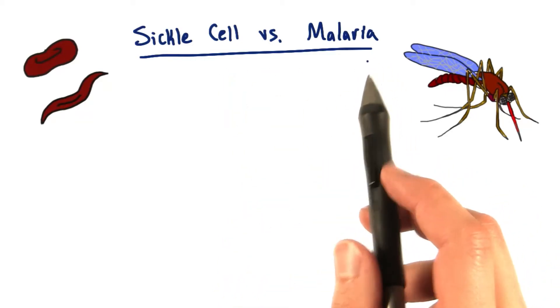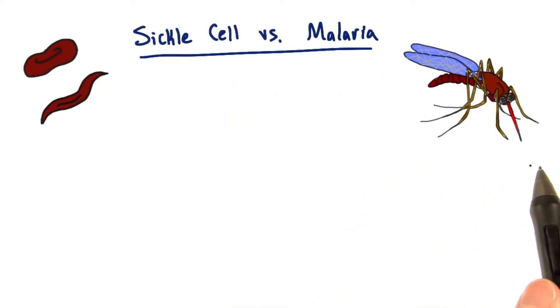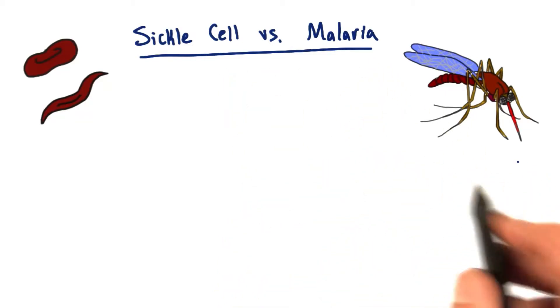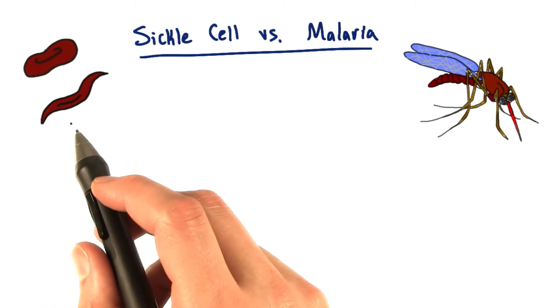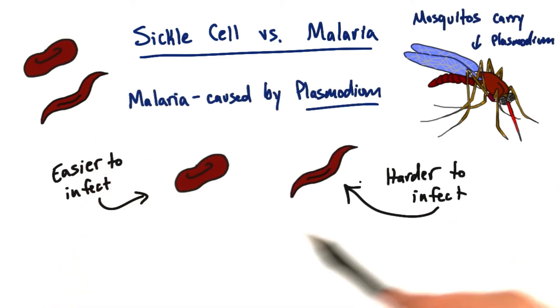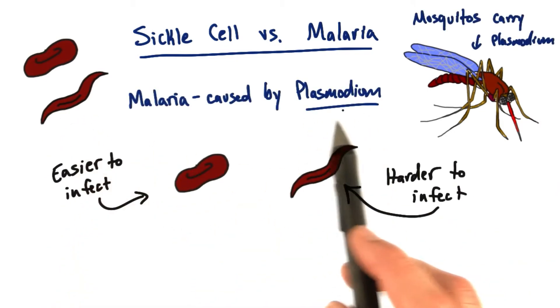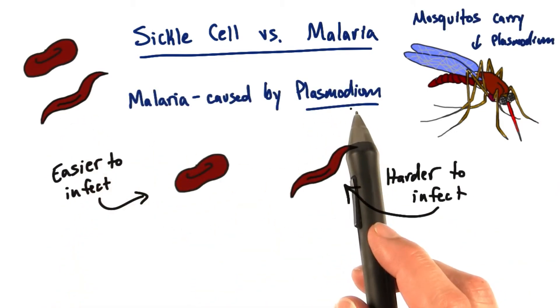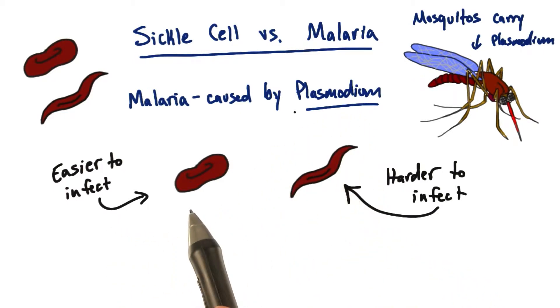Malaria is a disease that's spread by mosquitoes and involves a parasite that grows inside red blood cells. The parasite that causes malaria, called plasmodium, is able to easily infect normally shaped red blood cells.